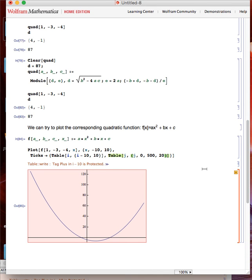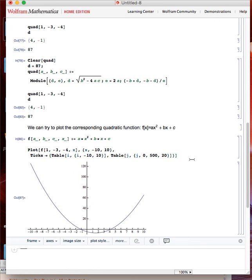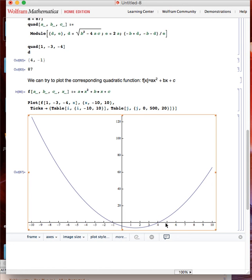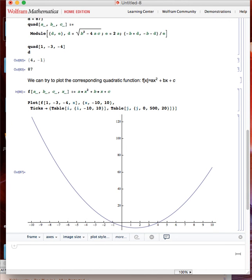Now as you can see, here are my two roots, minus one and four. So we can verify our solution by plotting the function. The function intersects the x-axis at minus one and four. That's all folks, thanks for watching this video, see you soon.